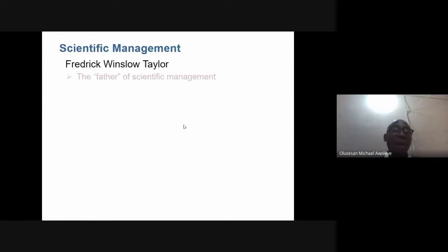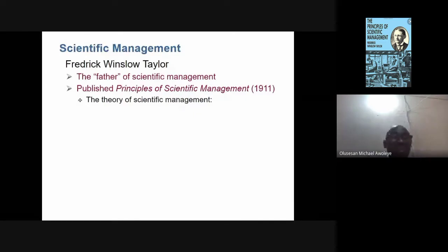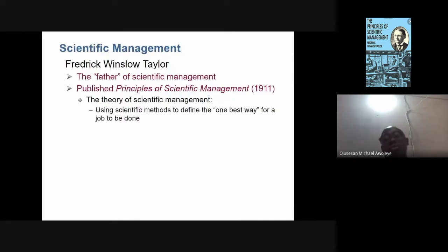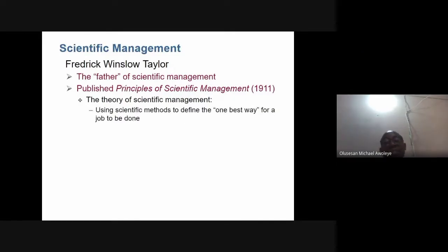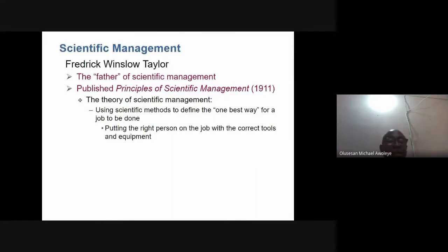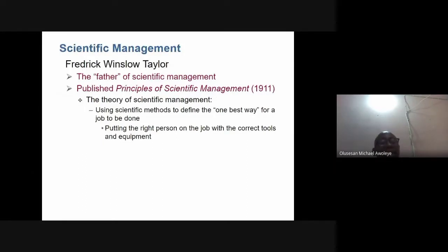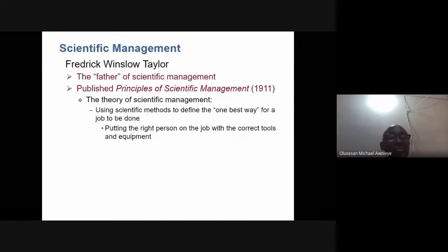Frederick Taylor, called the father of scientific management, published his principles in 1911. The kernel of scientific management is using scientific methods to define the one best way for a job to be done. He believes there must be a theoretical or scientific backing for whatever you want to achieve — just as academics seek a theoretical backing when writing any academic paper.